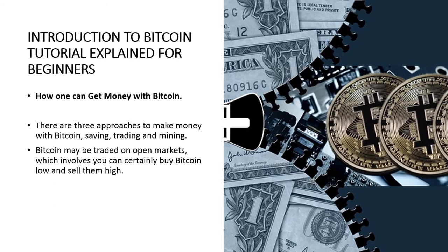How can one make money with Bitcoin? Contrary to several other currencies, there are three approaches to make money with Bitcoin: saving, trading, and mining. Bitcoin may be traded on an open market, which means you can buy Bitcoin low and sell them high.